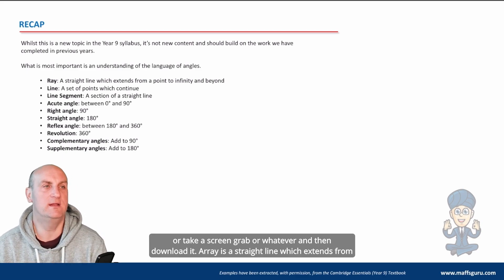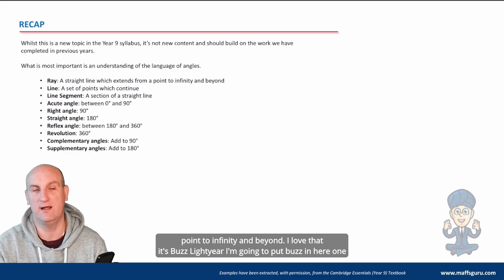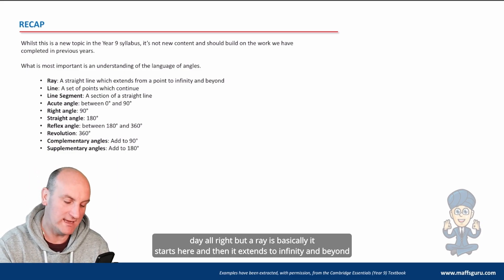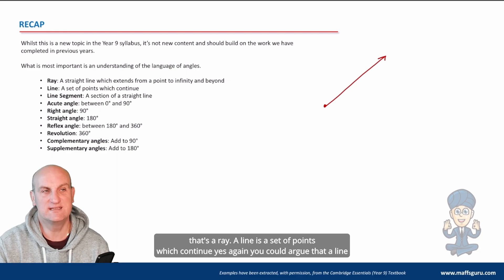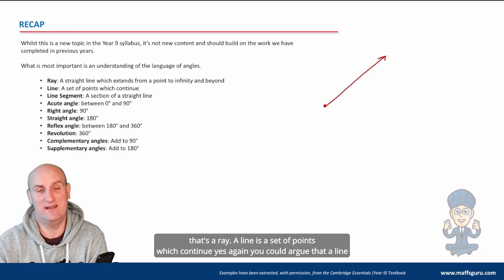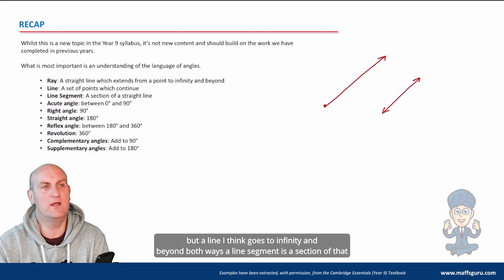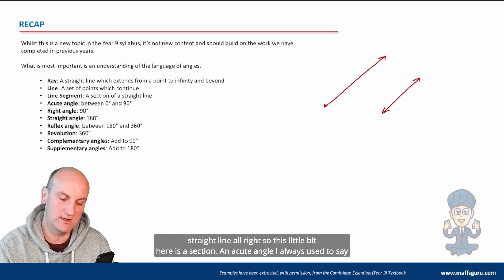A ray is a straight line which extends from a point to infinity and beyond. A line is a set of points which continue, I think, to infinity and beyond both ways. A line segment is a section of that straight line, so this little bit here is a section.